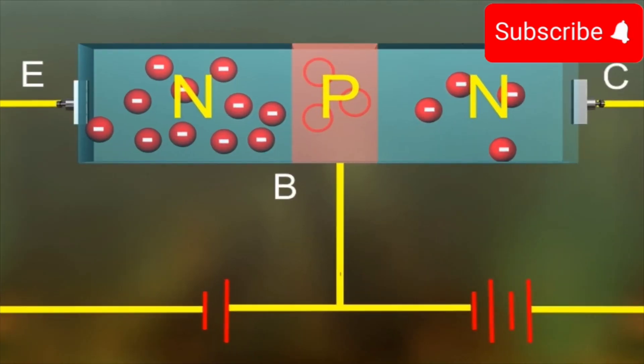We will describe the working of an NPN transistor which is used more extensively. The emitter junction being forward biased, the electrons easily enter the base from the emitter.